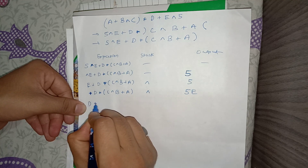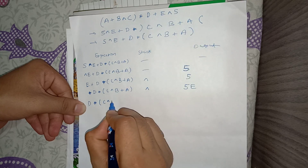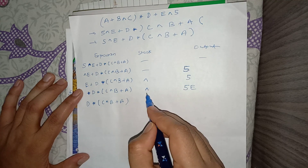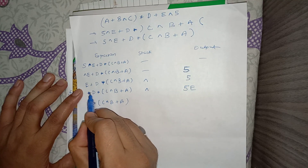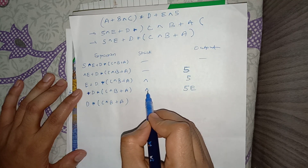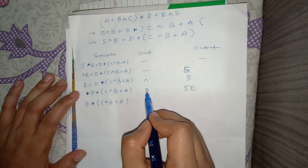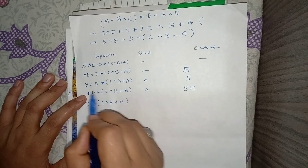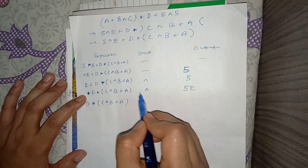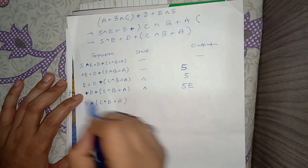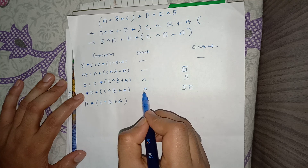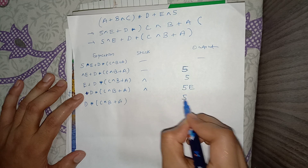When pushing an operator onto the stack, we check whether it has higher precedence than the operator on top. If not, we pop the top operator first. Plus does not have higher precedence than XOR, so we pop XOR to the output. Output is now 5, E, XOR, and plus goes onto the stack.